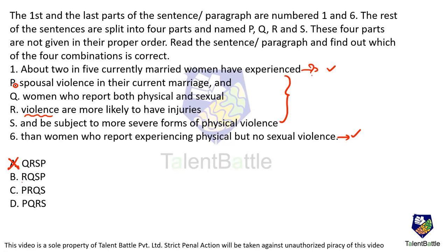P and Q form a pair — 'spousal violence in their current marriage' continues with 'women who report both physical and sexual violence.' Q and R are also a pair — 'both physical and sexual violence are more likely to have injuries and be subject to more severe forms.' So the order is P, Q, R, S — which is option D. Option D is the answer.